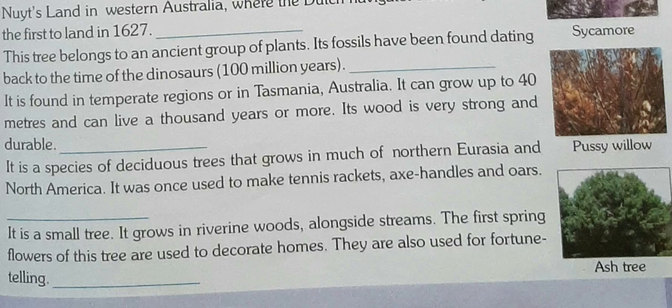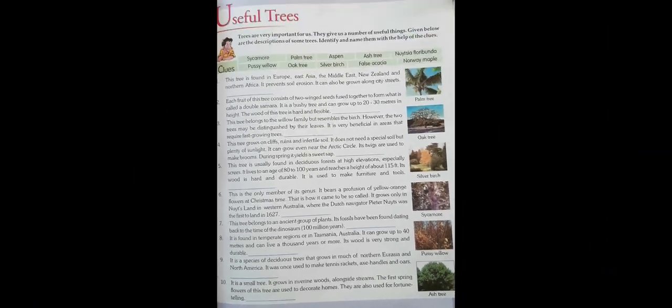Ash tree is a species of deciduous trees that grow in much of northern Eurasia and North America. It was once used to make tennis rackets, axe handles, and oars. This was all about chapter number 24, Useful Trees.